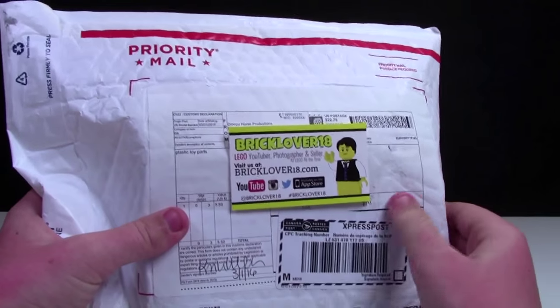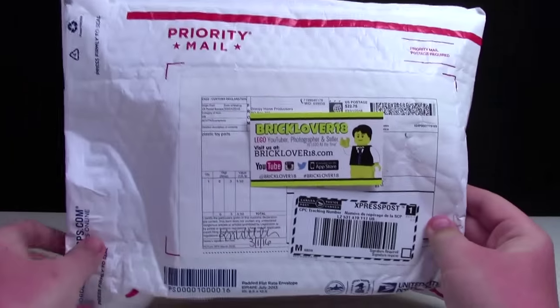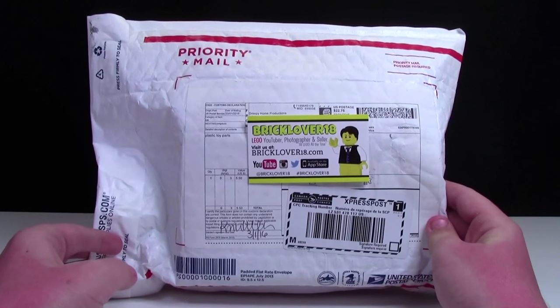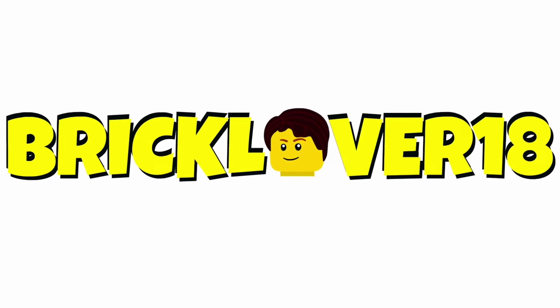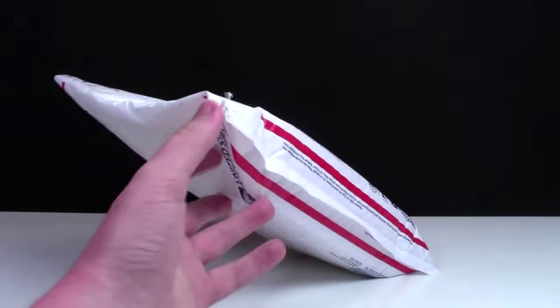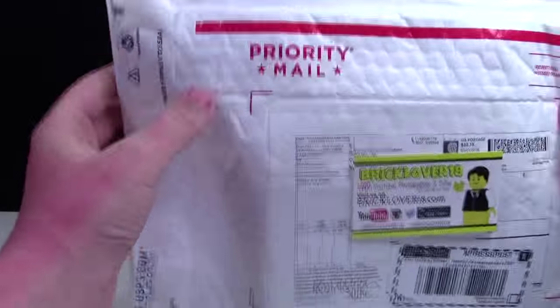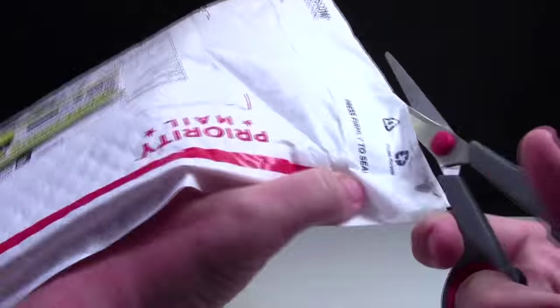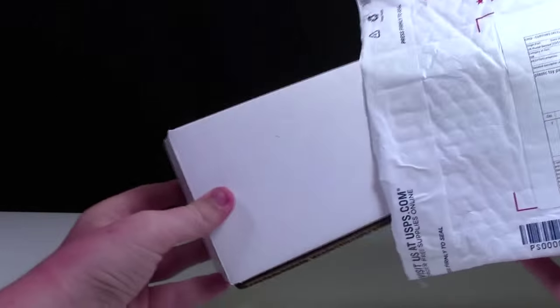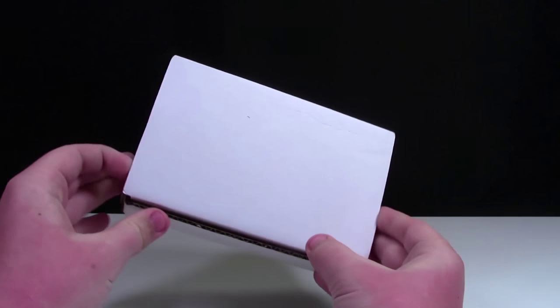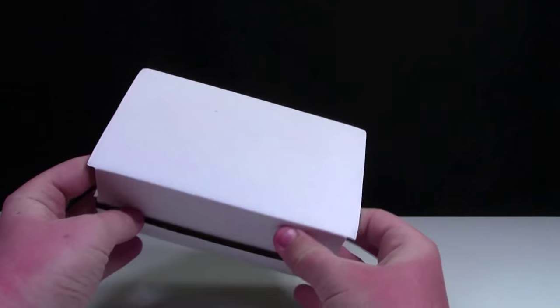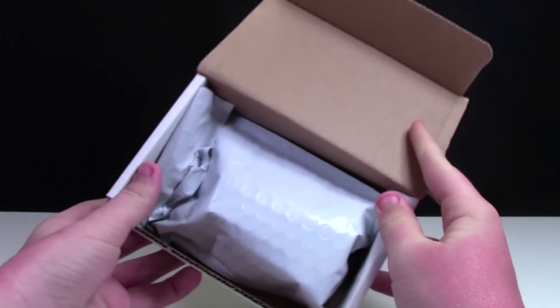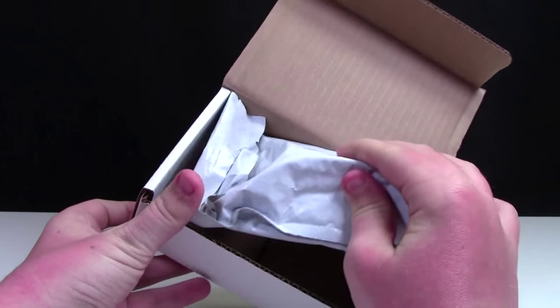But on the customs forms it does say plastic toy part, so I'm kind of excited to find out what's inside. So I was right, it is a box inside an envelope. And it's an envelope inside a box.